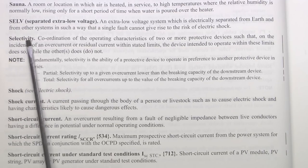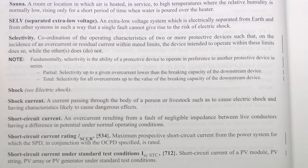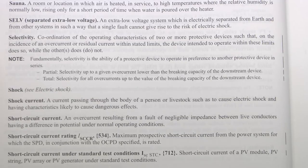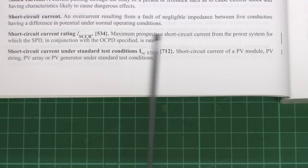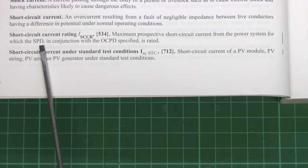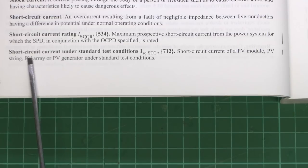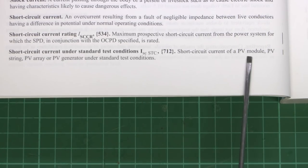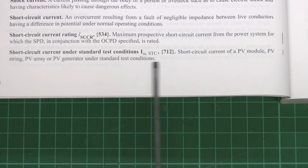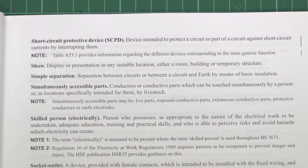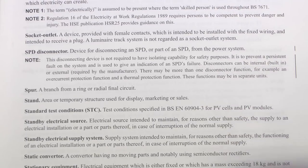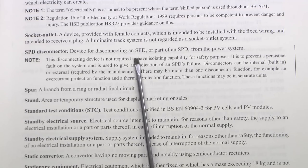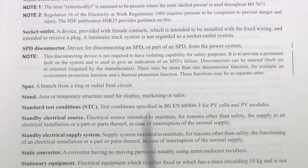Selectivity is another new one, which as we've already seen was what used to be called Discrimination. And at the bottom of the page we've got the Short Circuit Current Rating, or ISCCR, which is the maximum prospective short circuit current from the power system for which the surge protective device in conjunction with the other current protective device specified is rated — explained in section 534. We also have Short Circuit Current Under Standard Test Conditions, which is relevant to PV modules, or photovoltaic solar panels. And on the line of surge protective devices, we've got the SPD Disconnector, which is a device for disconnecting a surge protective device from the power system.